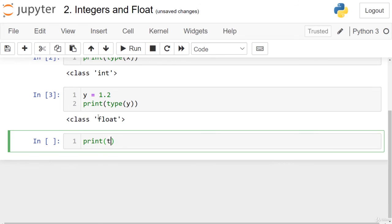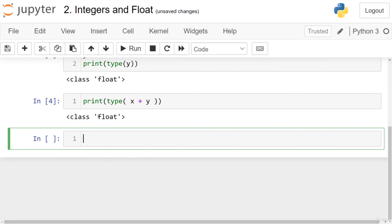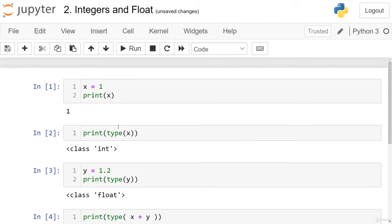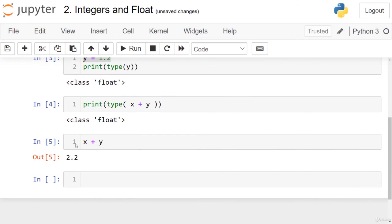What if we printed the type of x plus y? We will have a float. If we printed x plus y itself, we will have 2.2. What happened is that Python automatically detected that we have a float in our arithmetic calculation, which is 1.2, and the other one as 1. It converted this to 1.0 by itself and added the two together.